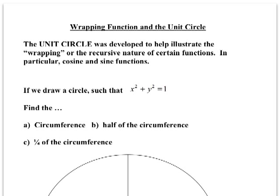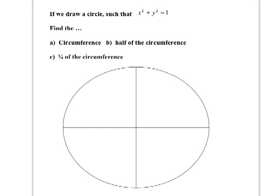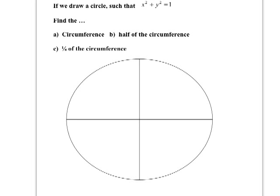If we look at this circle and assume it's a unit circle, let's find the circumference — how long it would be if we measured literally around the edge, like wrapping a string all the way around. Circumference is 2πr, so with a radius of 1, my circumference would be 2π in length.